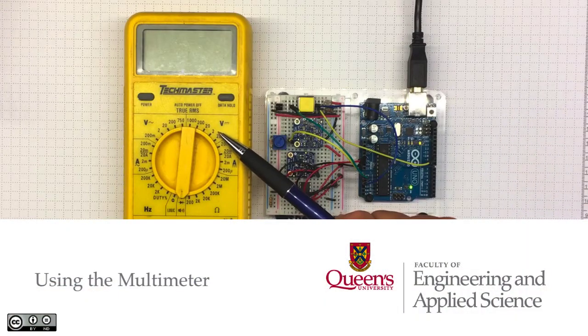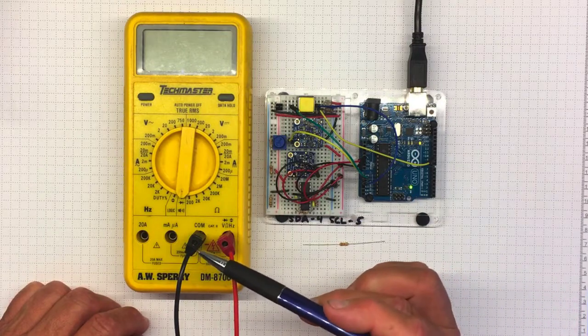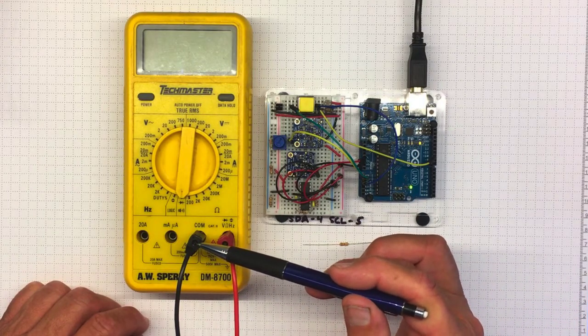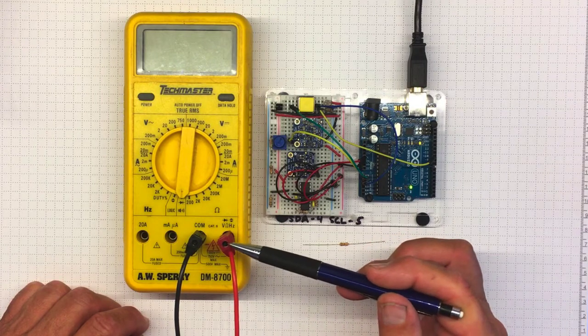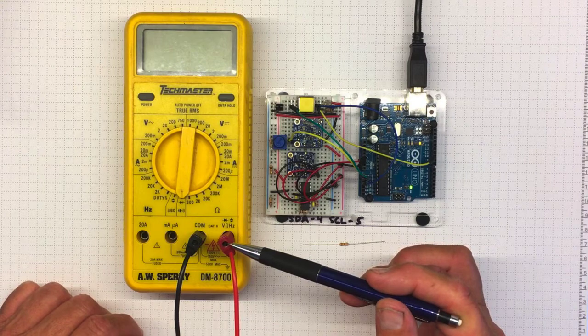We're going to do a lot of measurements with these multimeters. And before we even start, the most important thing is to make sure that we put the leads into the right sockets down here. The black one should go in the common and the red one should go into the voltage, ohms and so on measurement to let us make some measurements.